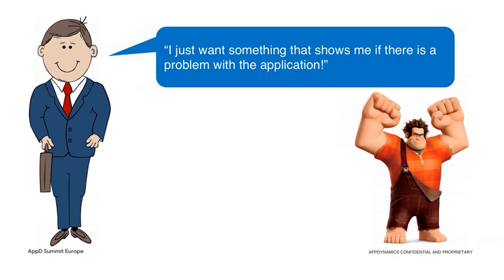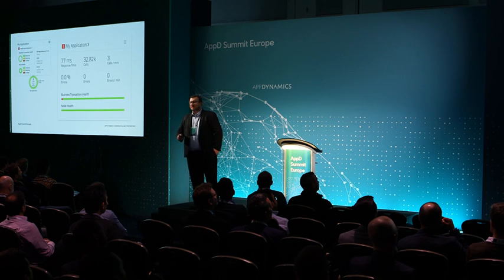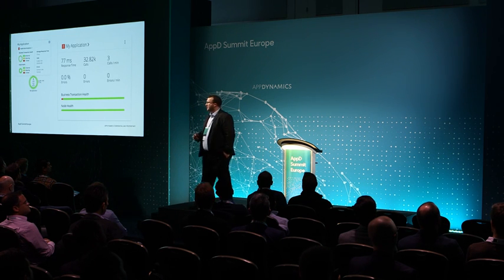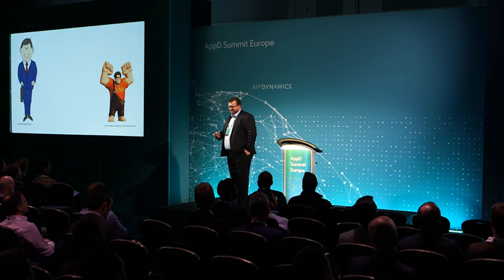The sales guy says: I just want something that shows me if there's a problem with the application. And I show him all of the out-of-the-box dashboards that come with AppDynamics. One thing we're really good at doing is showing you: is there anything wrong with our application? So why do you even want a dashboard at that point?